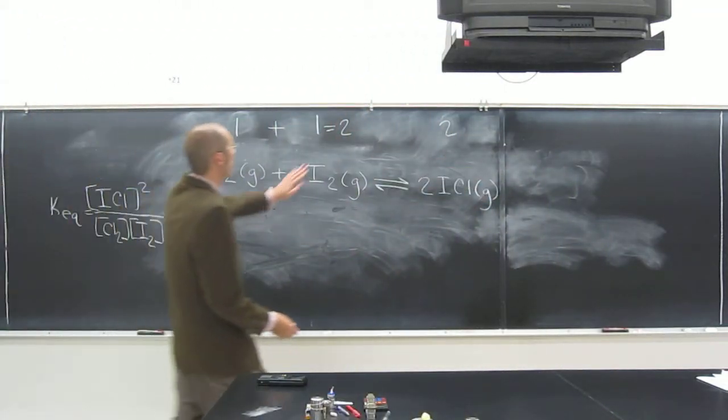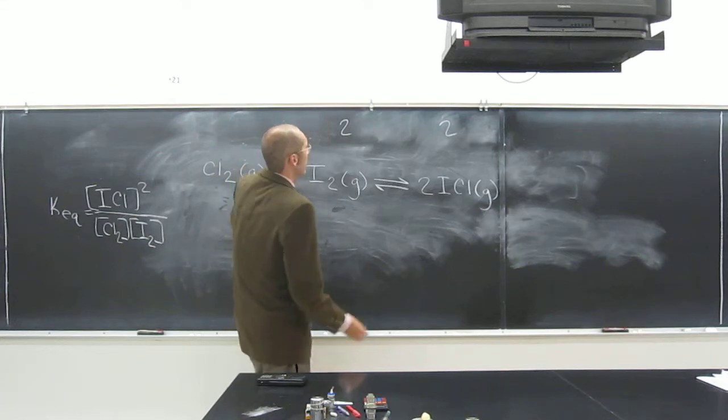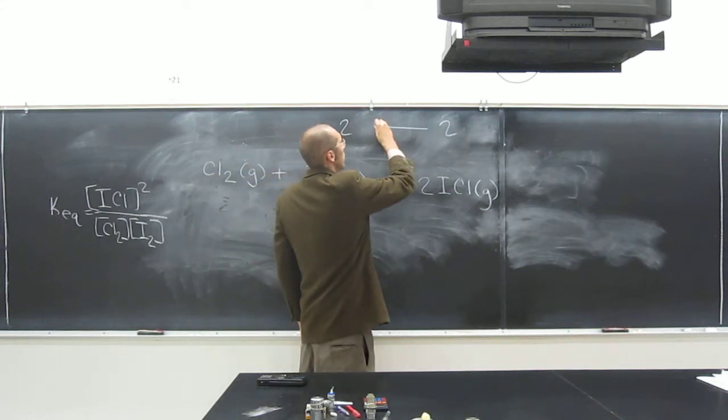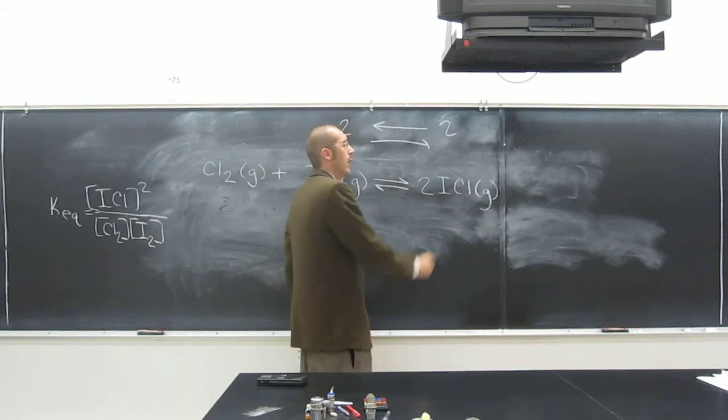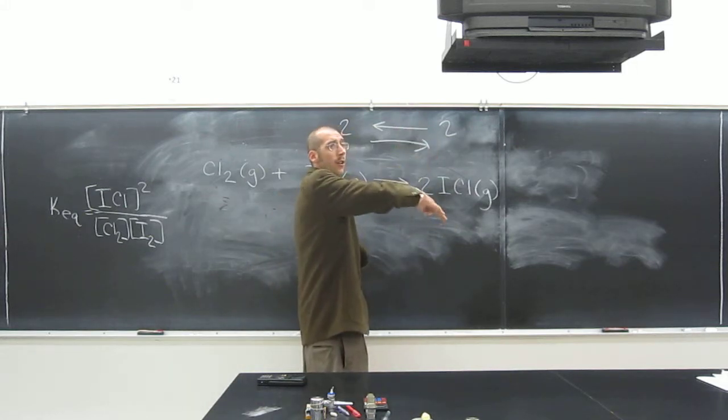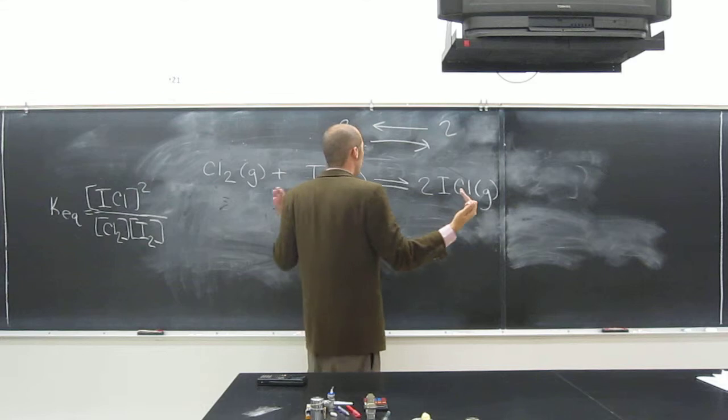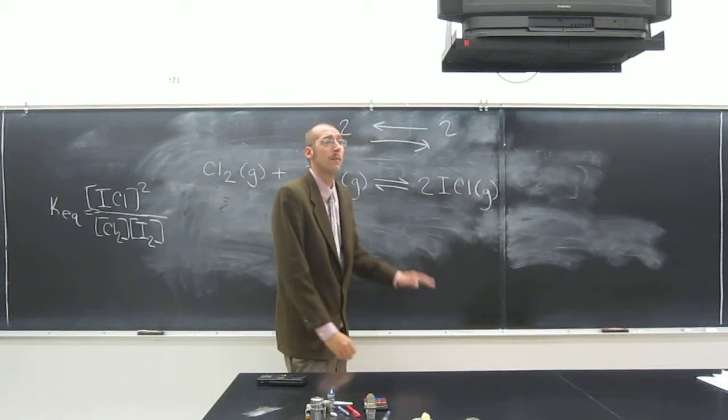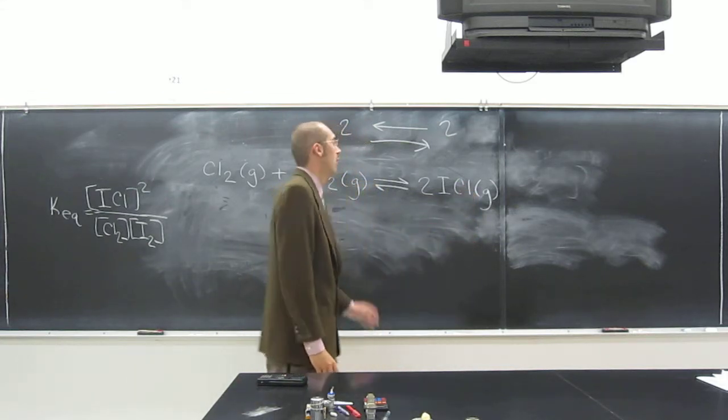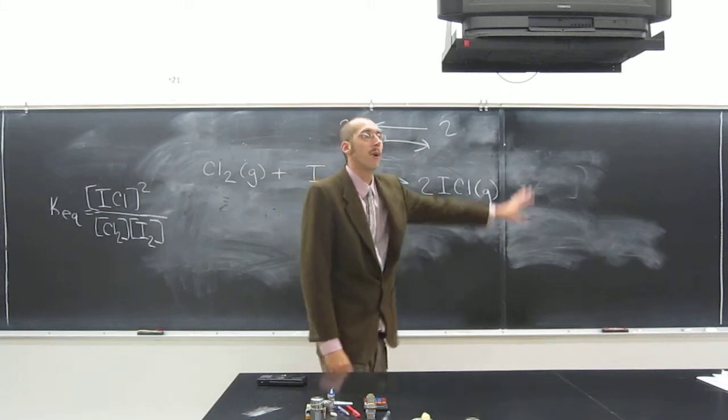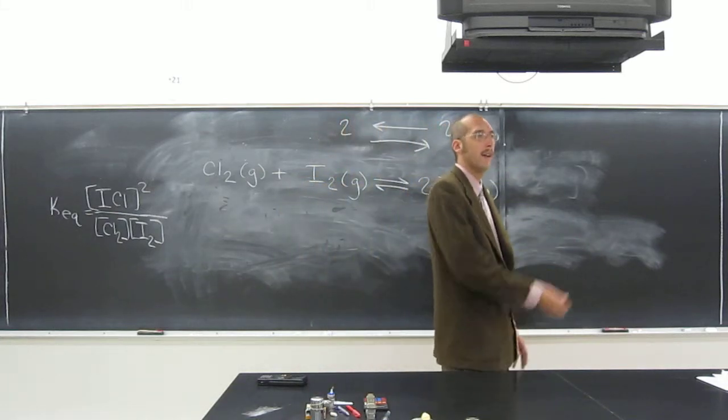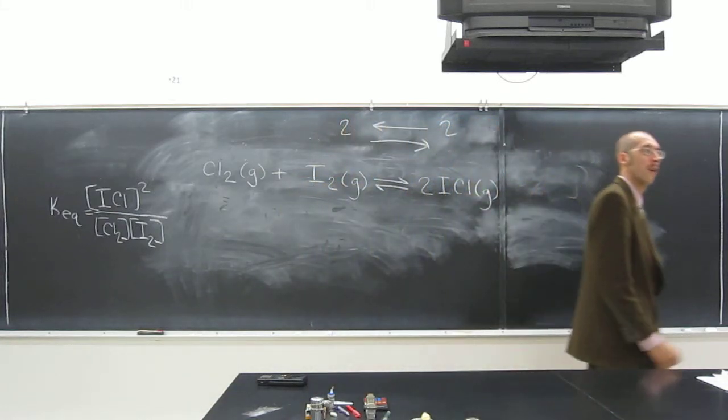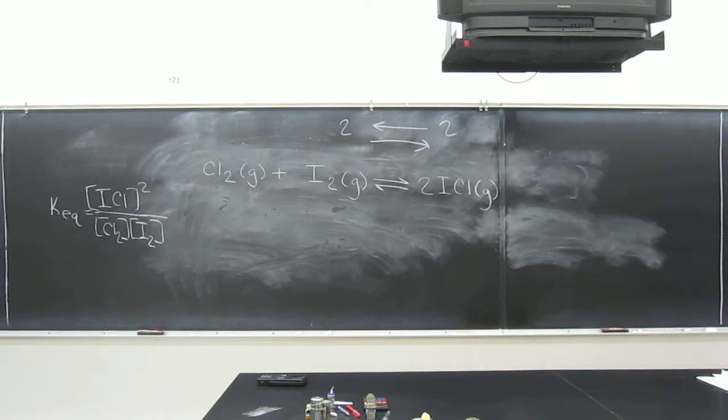So, it doesn't favor going from two to two or from two to two, they're the same. So, increasing the pressure, or decreasing the pressure, will keep the equilibrium constant the same. You cannot change the concentration of products by decreasing or increasing the pressure. Is everybody okay with that one?